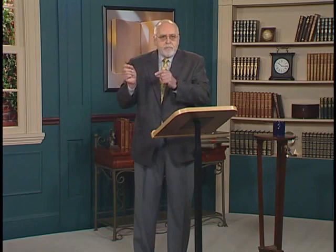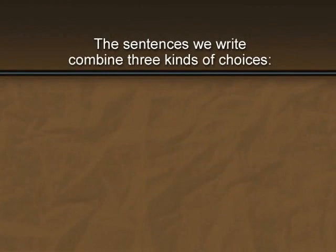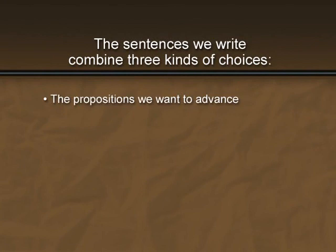The terms paradigmatic and syntagmatic are not in themselves important for us to remember, but they help us understand two of the most important variables in our writing. Add the large factor of subject and purpose, and the sentences we write combine three kinds of choices: the propositions we want to advance, the vocabulary we choose, and the syntax or order in which we want our readers to experience our propositions. Paying closer attention to the precision and syntax of the sentences we write can dramatically sharpen or improve propositional content.